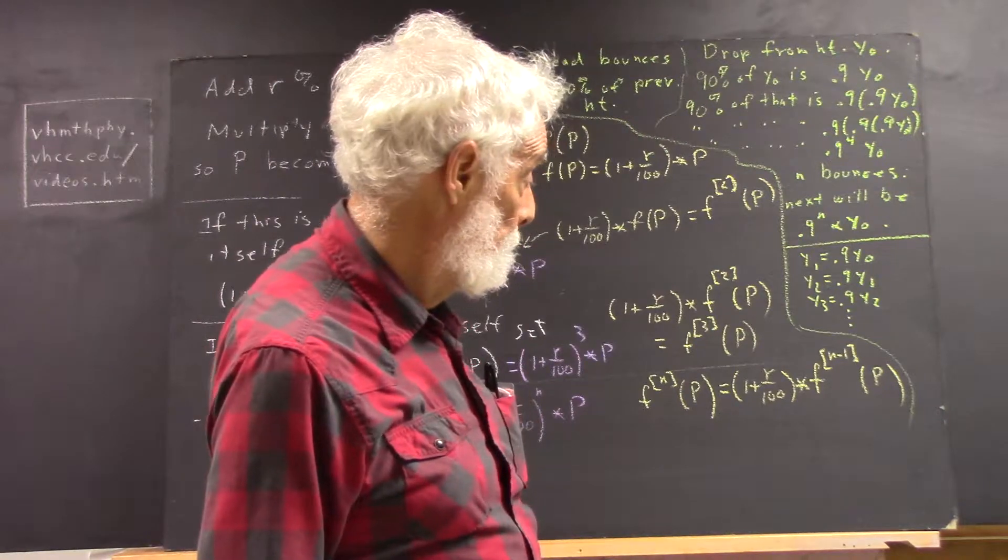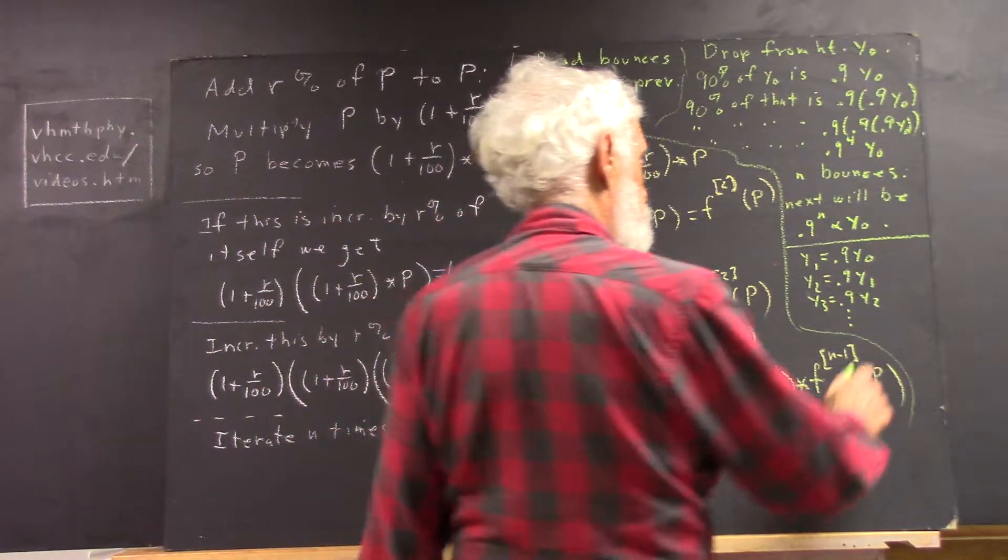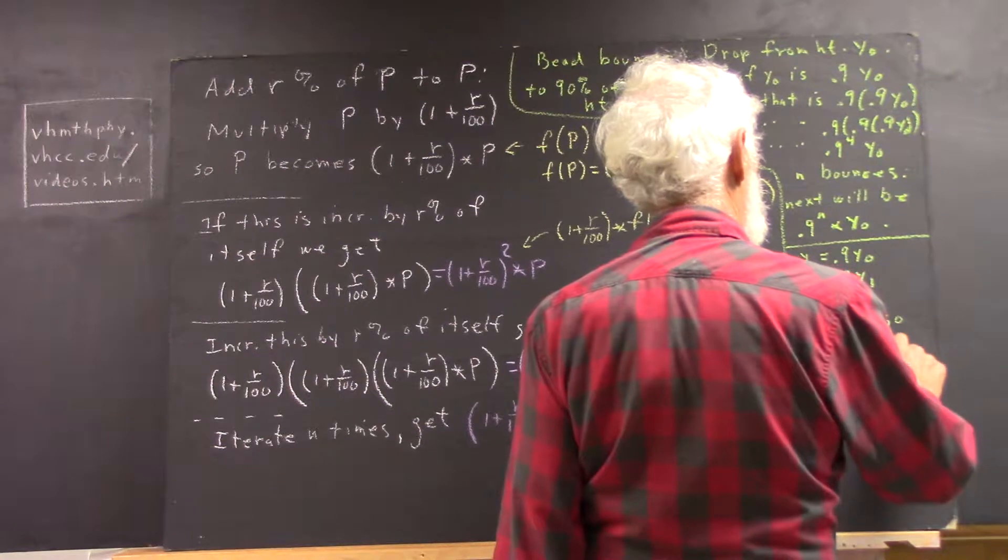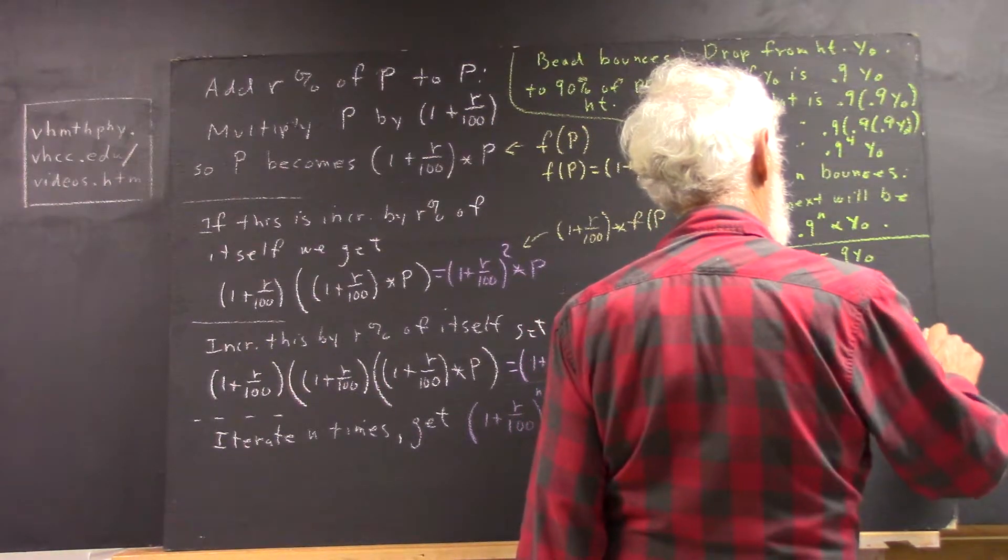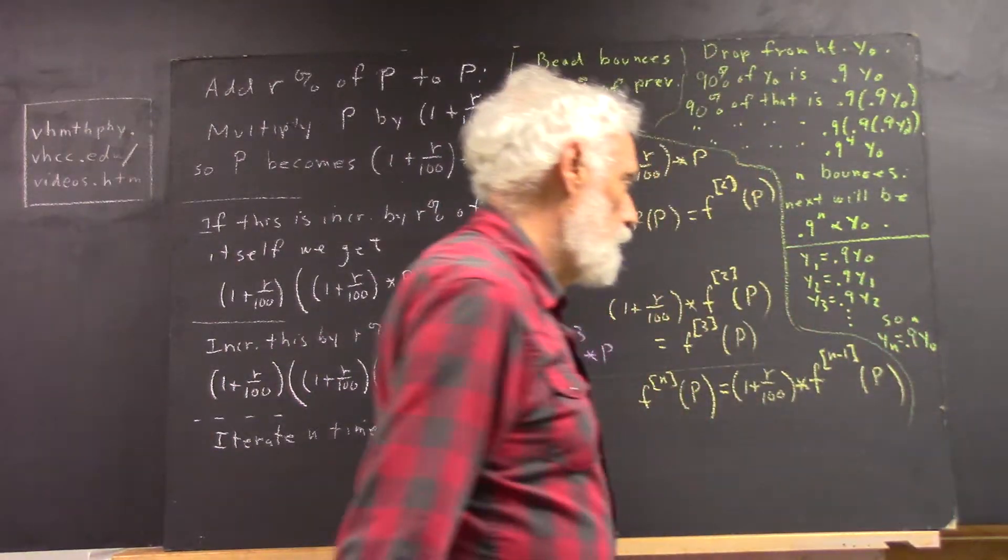Okay? So, y sub n has to equal 0.9 to the N times y0.